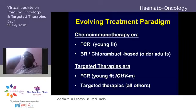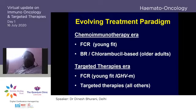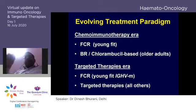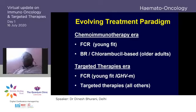In India, most patients were treated with rituximab and bendamustine — very few with FCR and very few with chlorambucil. Fortunately, ibrutinib is now available at very low cost, so we are now in a targeted therapy era.